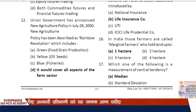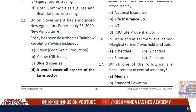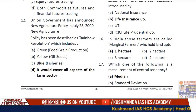Question 12: The Union Government announced a new agriculture policy in July 2000. Option D is correct — it would cover all aspects of the farm sector.